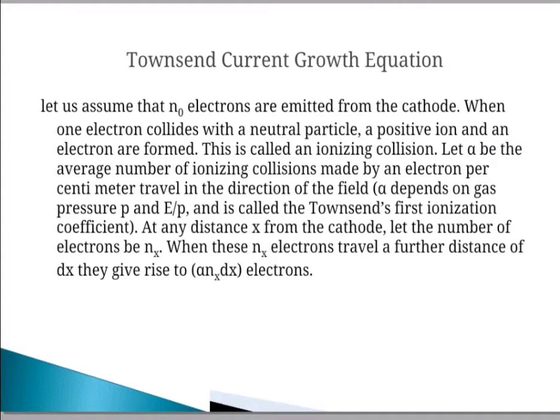Let us assume that n0 is the number of electrons emitted from the cathode. When one electron collides with neutral particles, a positive ion and an electron are formed. This process is called an ionizing collision. Let alpha be the average number of ionizing collisions made by an electron per centimeter travel in the direction of the field. Alpha depends on the gas pressure P and E/P, and it is called Townsend's first ionization coefficient.